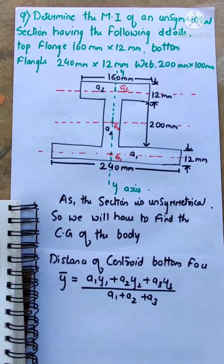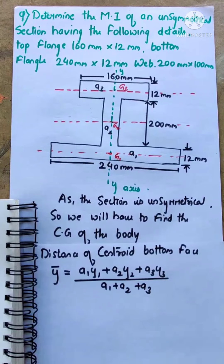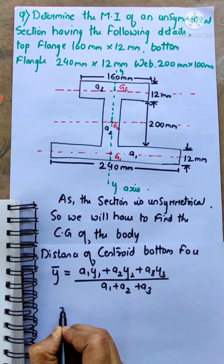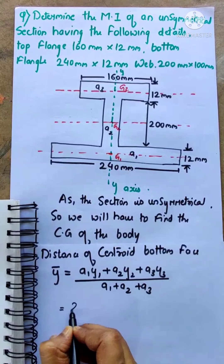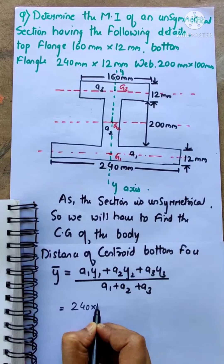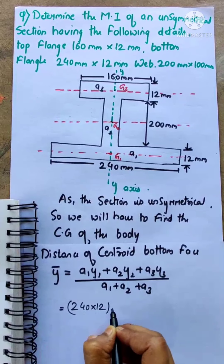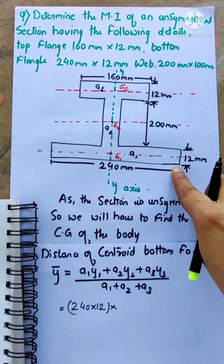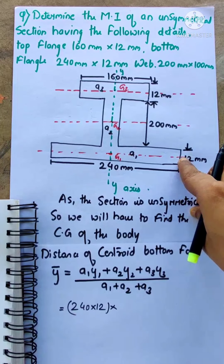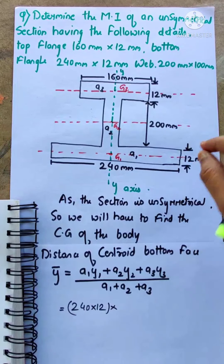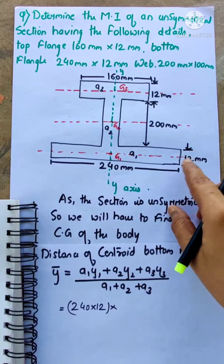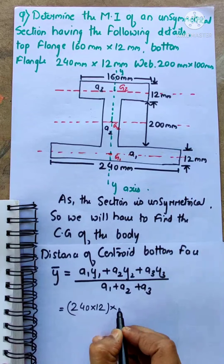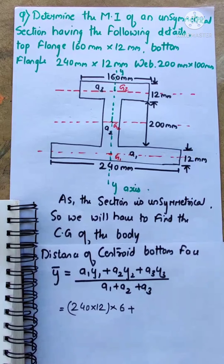Now we calculate each area and its centroidal distance from the bottom. Area 1 has breadth 240 mm and depth 12 mm. Its centroid y1 is at half its depth from the bottom, which is 6 mm. Area 2 is the web with breadth 10 mm and depth 200 mm.